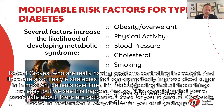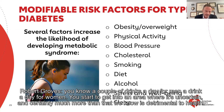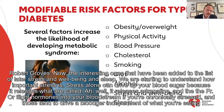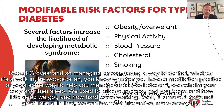Alcohol in moderation is okay, but when you get past a couple of drinks a day for men or a drink a day for women, you start to get into an area where it's uncertain, and certainly much more than that we know is detrimental to health. The interesting ones that have been added to the list more recently are stress, well-being, and sleep. We are starting to understand how important stress is. Stress alone can drive up your blood sugar because it releases adrenaline and the fight-or-flight hormones into your bloodstream if you're chronically stressed. Those tend to drive up blood sugar independent of what you're eating. Managing stress — whether it's a walk in the woods, a meditation practice, or yoga — some way to help you manage stress so it doesn't overwhelm your body.